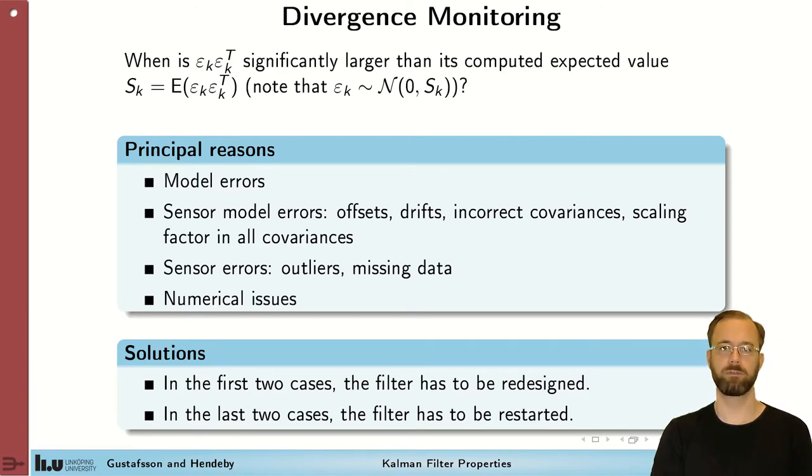To resolve these two first cases, we have to redesign the filter to actually match the proper models. If the last two things happen, the filter can be restored or just the measurement skipped to solve the problem.